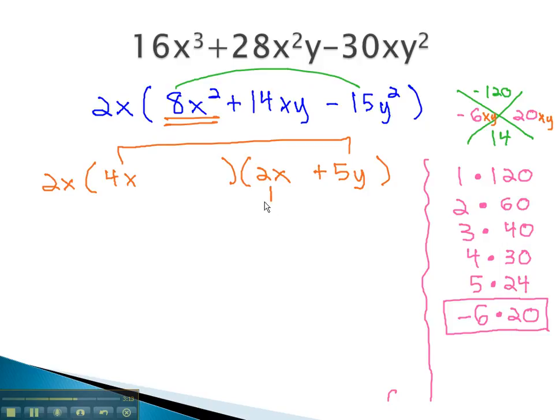We can also factor 2x out of the other number, the negative 6xy. When we factor the 2x out, we get negative 3y.